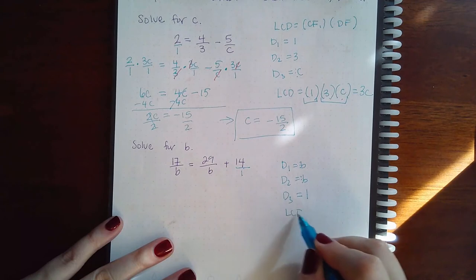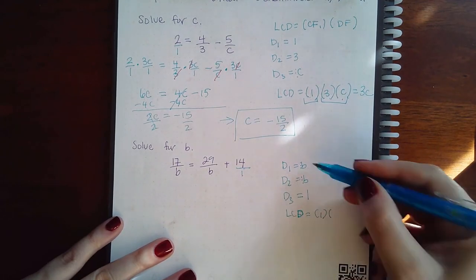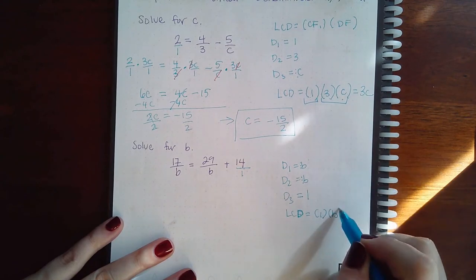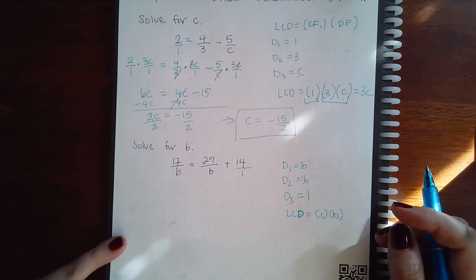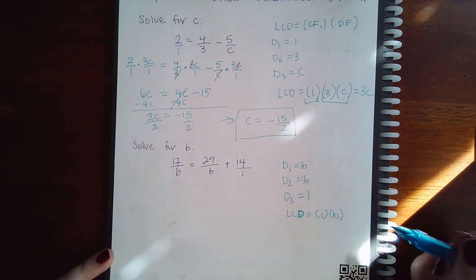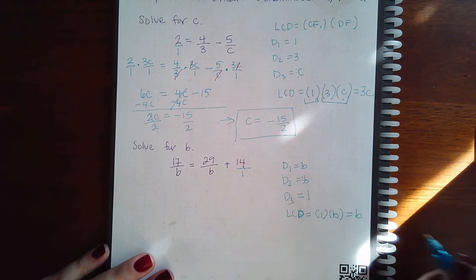So, what do they have in common? They have the 1 in common. These two have a B in common. And then there's nothing else extra other than the 1s and the Bs. So, there's no other distinct factors going on here. So, if I multiply those together, that's just B.